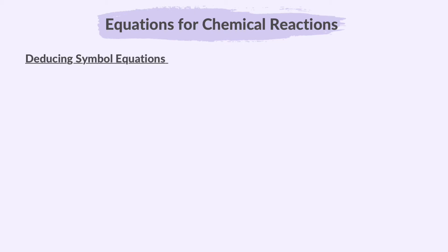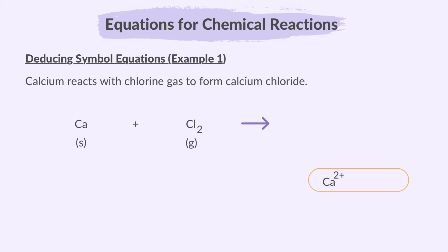Deducing symbol equations. This means figuring out the right symbol equation for a reaction when you are given information about it. Example 1, calcium reacts with chlorine gas to form calcium chloride. This is written as Ca plus Cl2. The 2 in Cl2 means there are 2 chlorine atoms in the diatomic molecule. Calcium is a group 2 element with a valency of plus 2, and chlorine has a valency of minus 1. The valencies are criss-crossed to derive the formula of CaCl2.